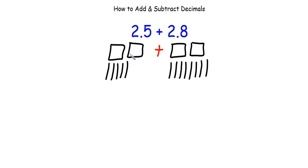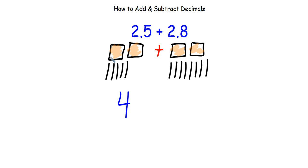Remember that each grid is made up of 10 rods, because that gives you 10 tenths and that gives you a whole. So now all I do is put my pictures together. I'm going to first put together my wholes — I have 1, 2, 3, 4 wholes. And now I'm going to count all my tenths together. Remember, if I get 10 of them, I make another whole.